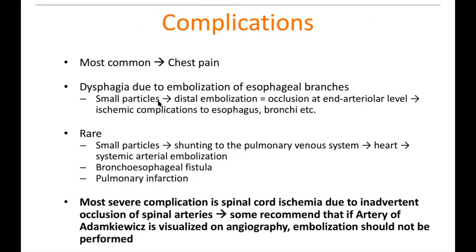Regarding complications, the most common is chest pain. Rarely you can have sequela of non-target embolization — small particles traveling distally can cause ischemia of the esophagus or bronchi, or systemic arterial embolization via shunting. The most severe complication is spinal cord ischemia due to inadvertent occlusion of the spinal arteries. Some operators will not embolize if the artery of Damkowitz is visible; others, as in the case of a 24-year-old with cystic fibrosis, go distal to the intercostal branches supplying it and embolize successfully without complications.